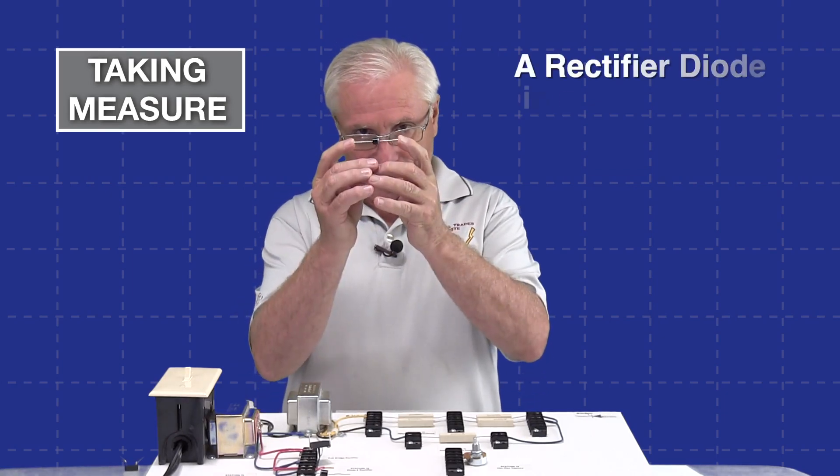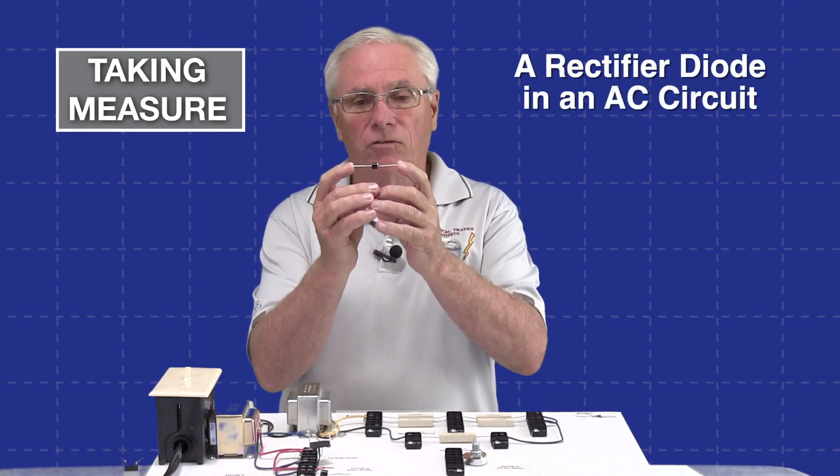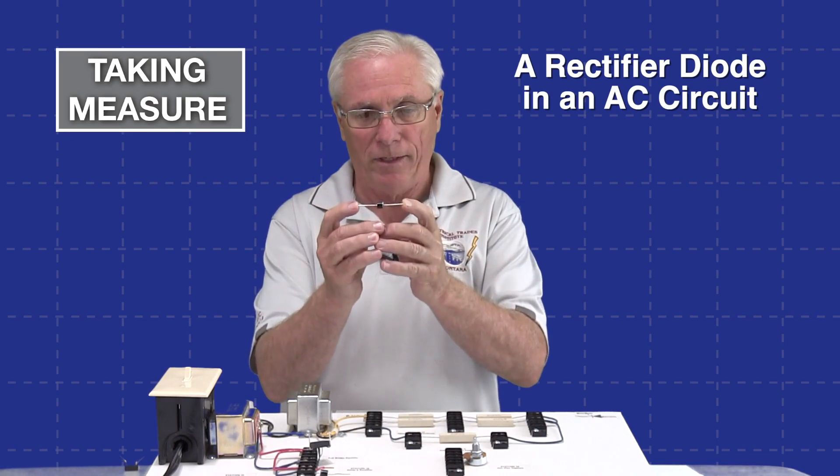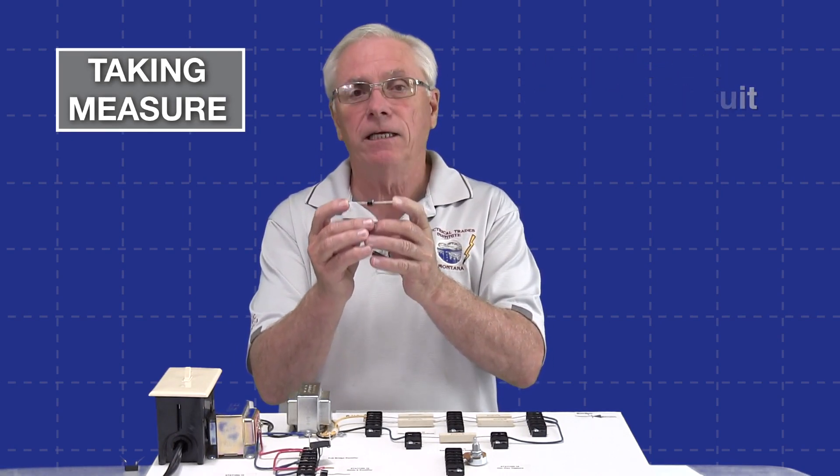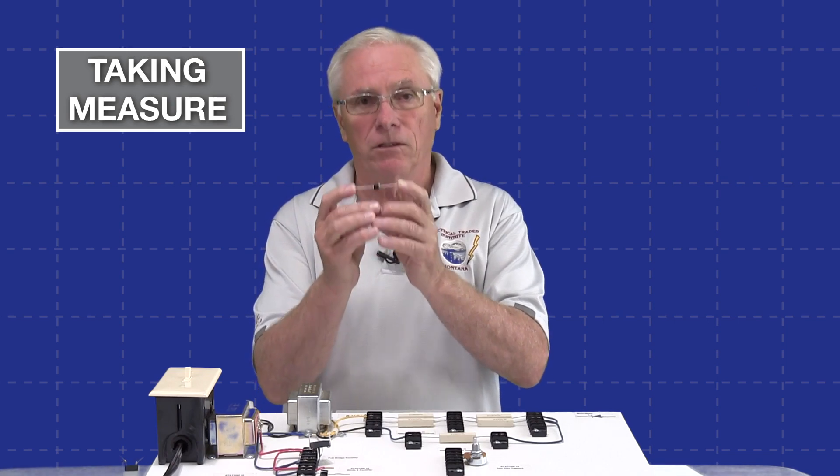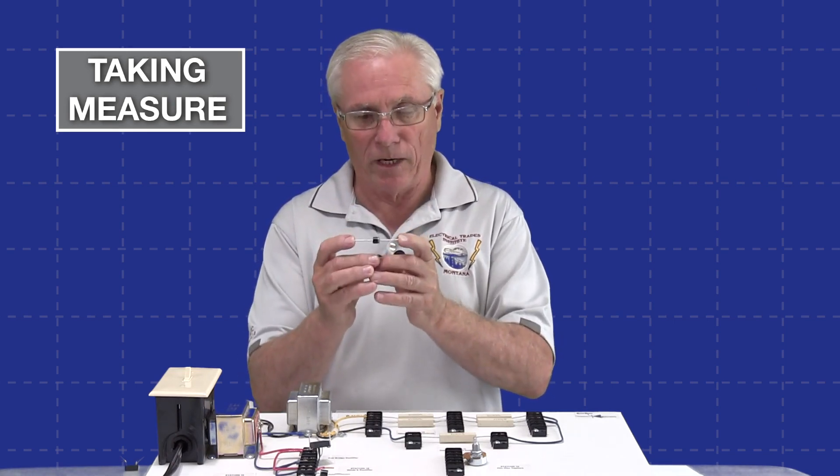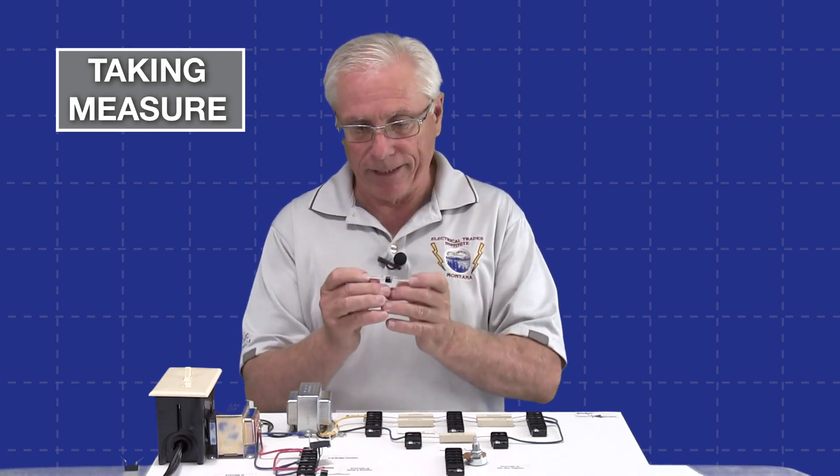I have here, it might be kind of small for you, it's a rectifier diode. A rectifier diode simply takes an AC current and converts it to a direct current. It's a pulsating direct current, but it is a direct current.